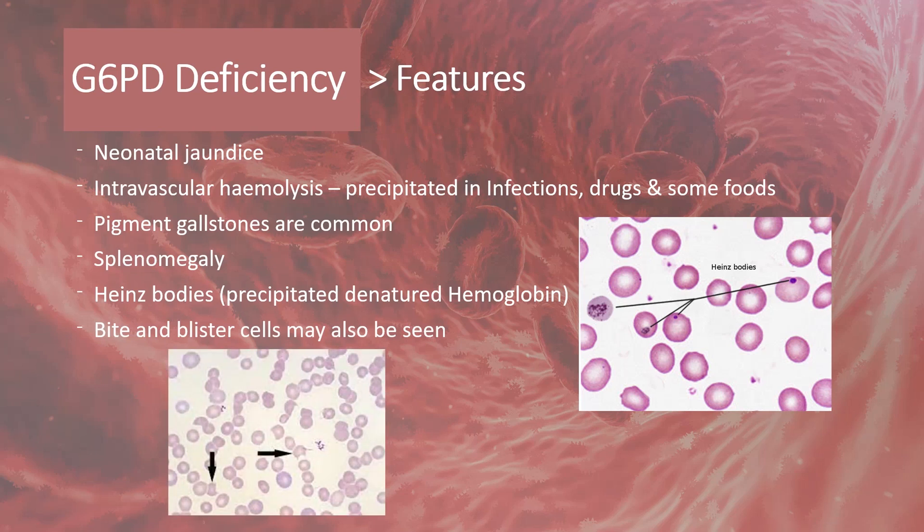Bite cells, as the name indicates, are red cells from which the portion containing precipitated hemoglobin has been bitten off by the splenic macrophages.